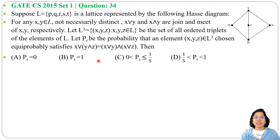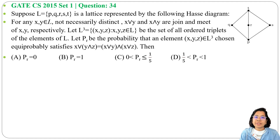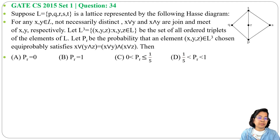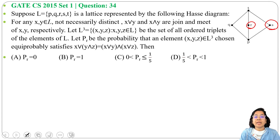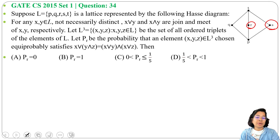The question asks what is the probability of randomly choosing three elements from {p, q, r, s, t} that satisfy the distributive property. First of all, this lattice is NOT a distributive lattice. You can check: for q, there are two complements — r is the complement and s is the complement. For a distributive lattice, there should be at most one complement. Similarly for r, there are two complements q and s; for s also two complements — hence it's not a distributive lattice.